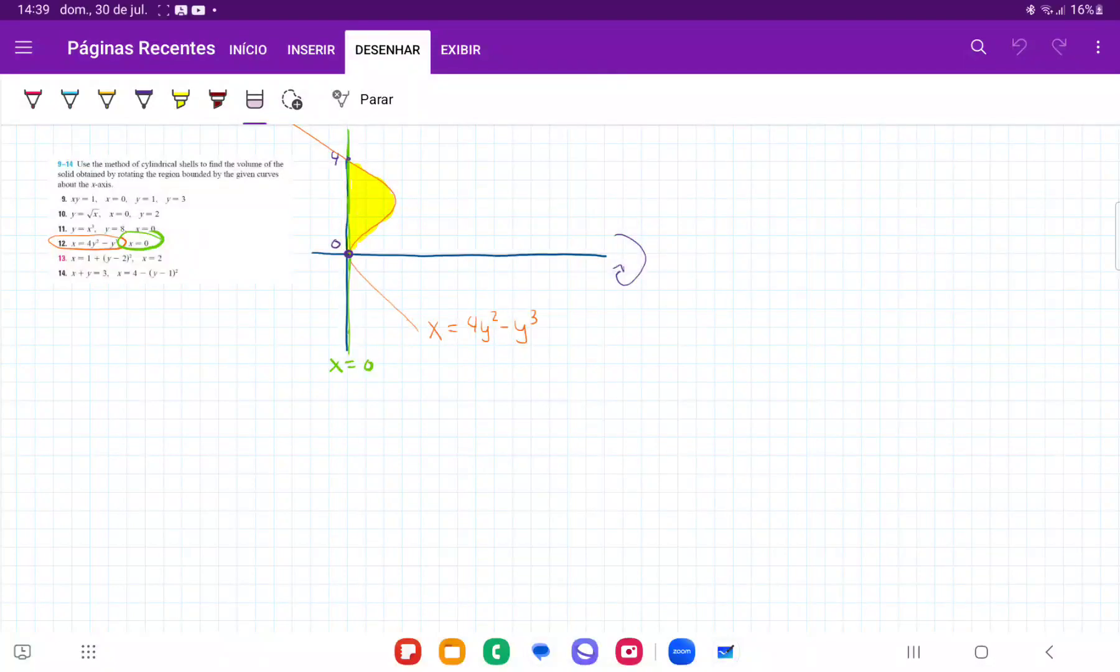So for number 12, they want us to take the area between these two curves and then revolve it about the x-axis.